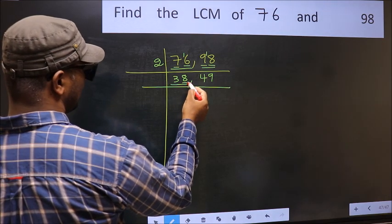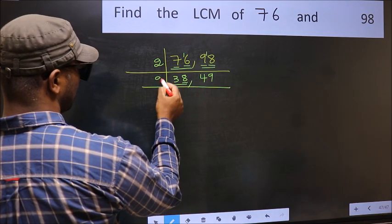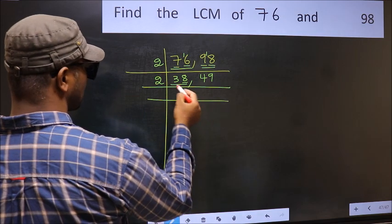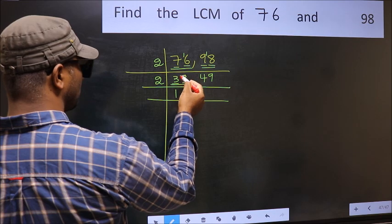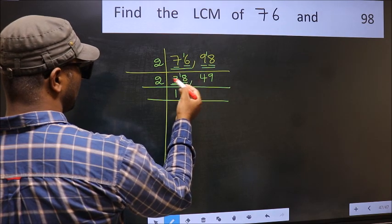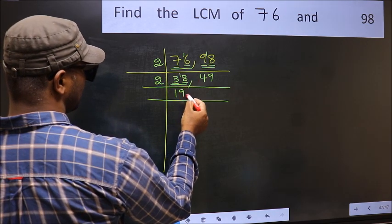Now we have 38. Last digit 8 is even so take 2. First number 3. A number close to 3 in 2 table is 2 times 1 is 2. 3 minus 2 is 1. 1 carry it forward 18. When do we get 18 in 2 table? 2 times 9 is 18.